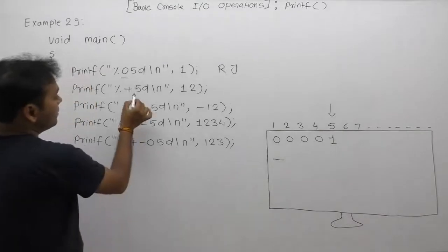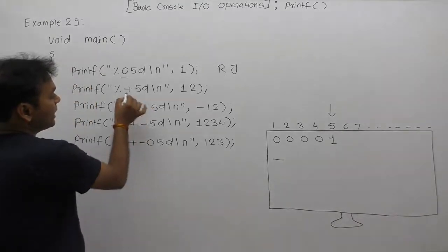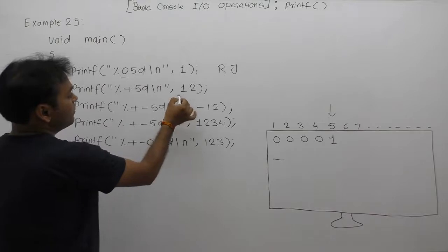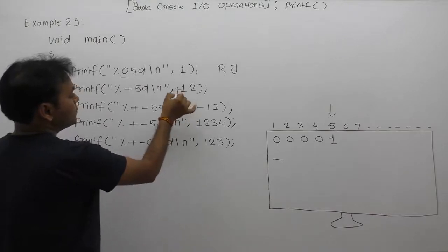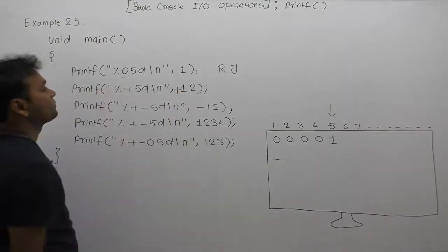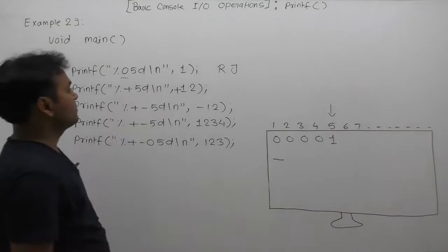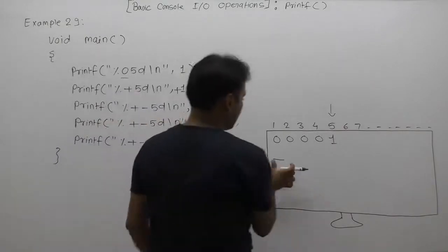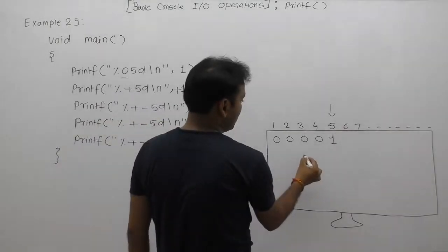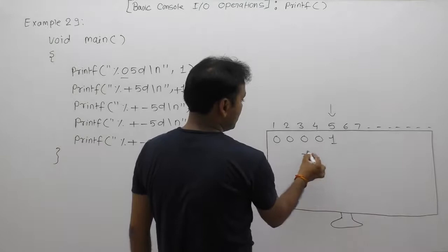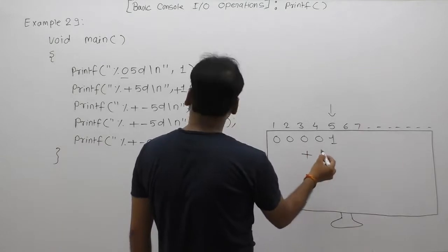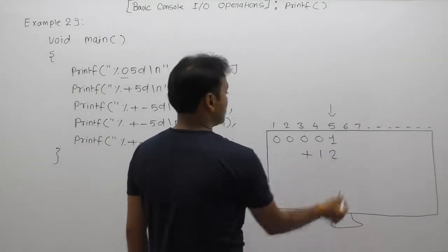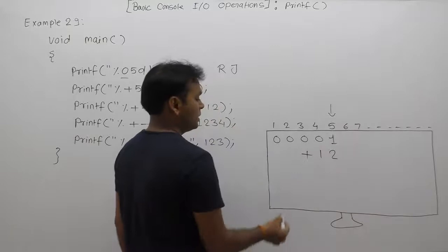Next, using the format specifier plus 5D: according to plus, the sign of the number is also displayed, like +12. The width value is 5, and the default justification is right to left. Therefore, the number is displayed as plus 12, right justified within the 5-character width.